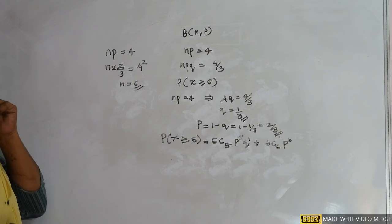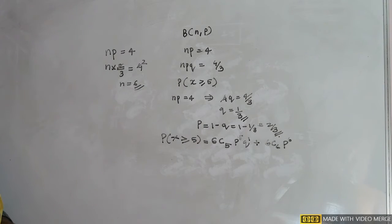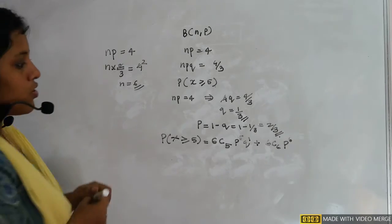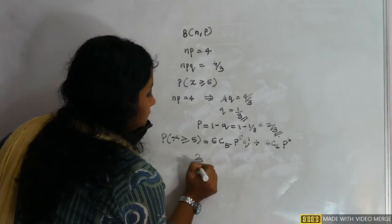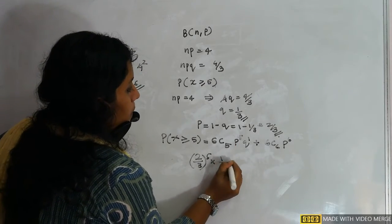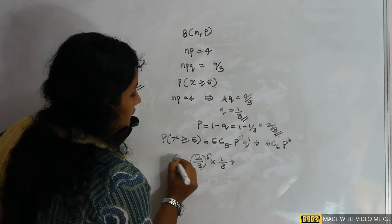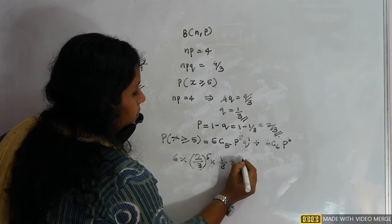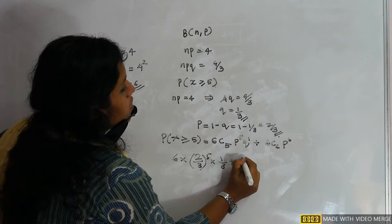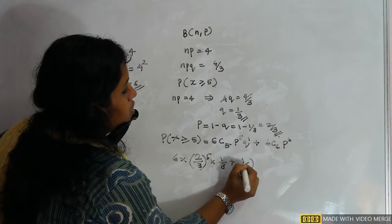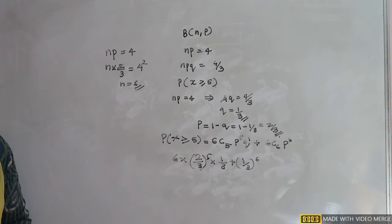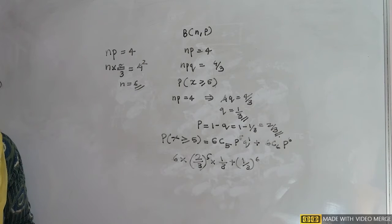6C5 = 6 and 6C6 = 1. So: 6 · (2/3)^5 · (1/3) + 1 · (2/3)^6. Solving: the numerator combines to give 2^8, and the denominator gives 3^6.